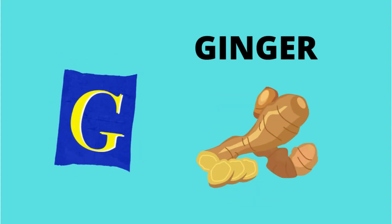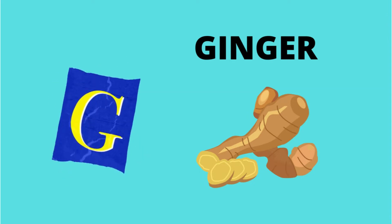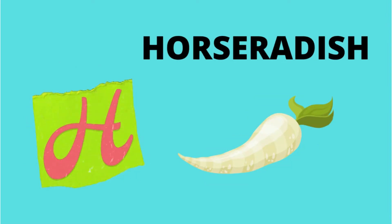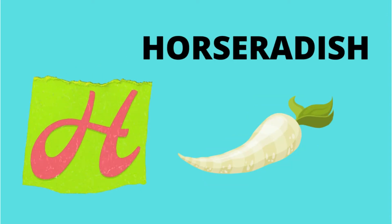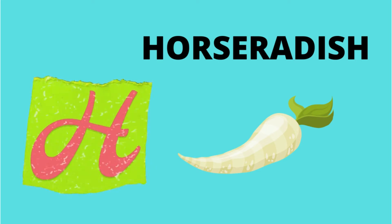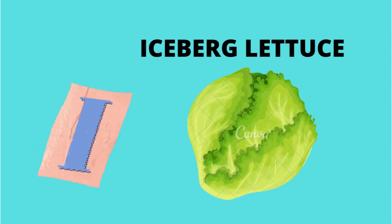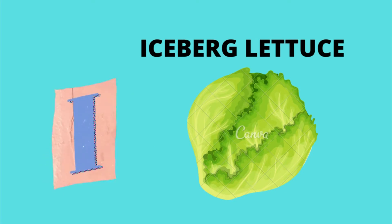G. G is for Ginger. H. H is for Horseradish. I. I is for Iceberg Lettuce.